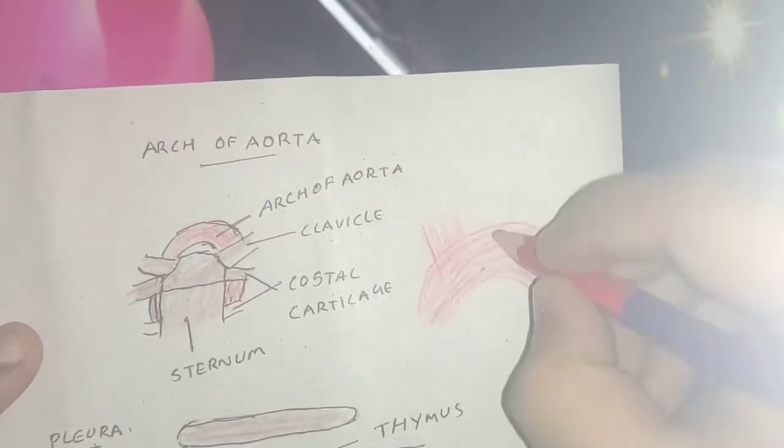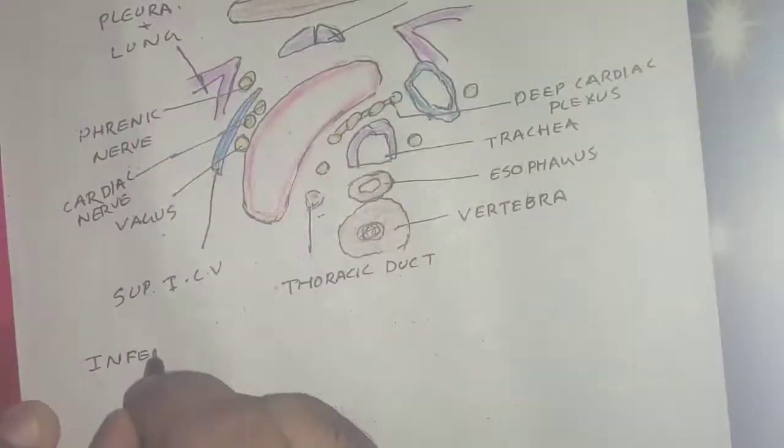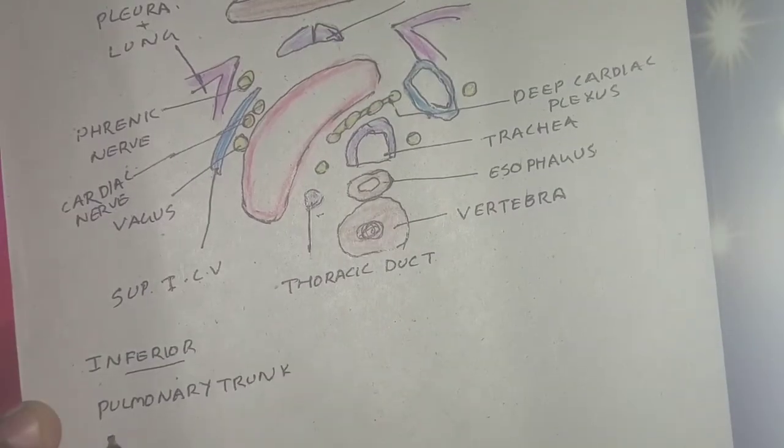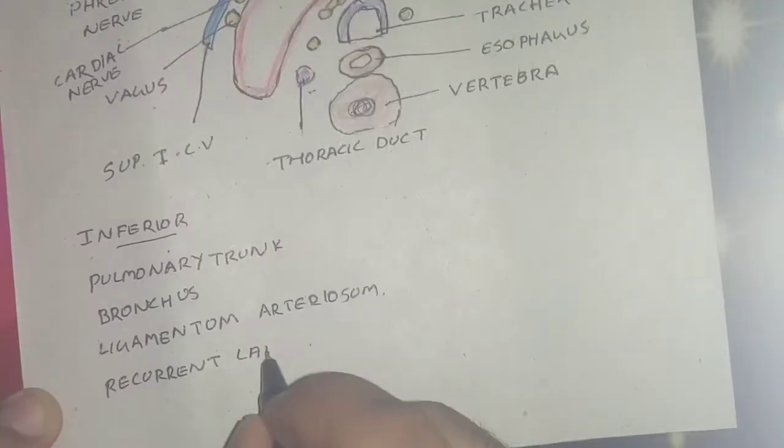For the superior relation, the three branches - that is the left common carotid, left subclavian, and brachiocephalic - are the superior relations. For the inferior relation, it is the bifurcation of pulmonary trunk, left bronchus, ligamentum arteriosum, and left recurrent laryngeal nerve.